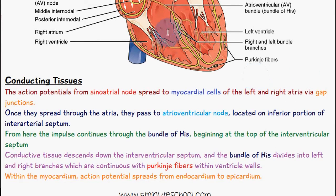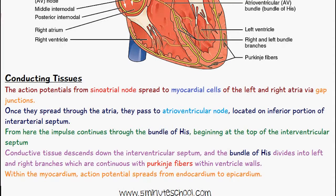So that's the basis of the conduction of the action potential: initially from the sinoatrial node it passes throughout the atria to the atrioventricular node, down to the bundle of His, and then spreads through the Purkinje fibers throughout the ventricles. That's everything for today's video — thank you very much for watching.